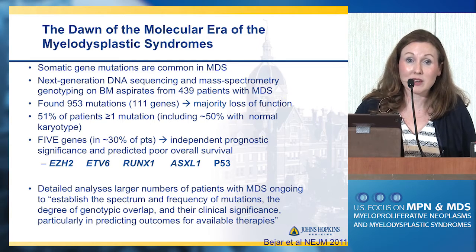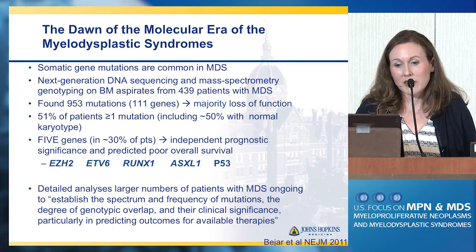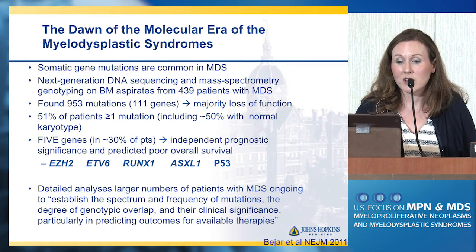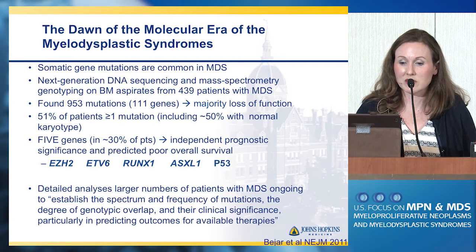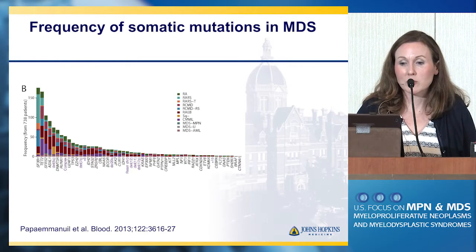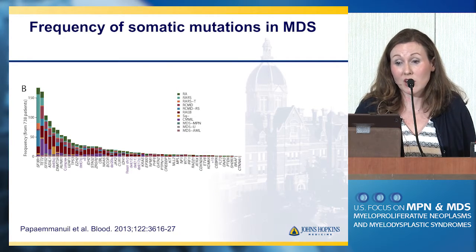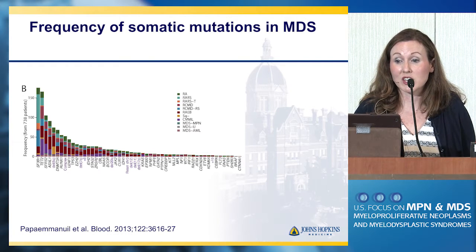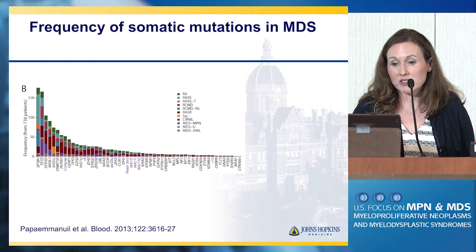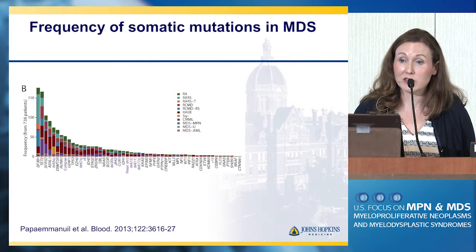And this is where the field is going — again, trying to decrease that heterogeneity. I list the five genes here from this publication, and I know everyone's most familiar with TP53. There have been further detailed analyses of larger numbers of patients trying to establish the spectrum and frequency of these mutations, and as we move forward we're understanding more about their clinical significance. This is just another representative publication showing, based on morphologic subcategory pathologically, the frequency of these somatic mutations that we can see in myelodysplastic syndrome. This is becoming more and more standard of care at the time of diagnostic procedures for these patients to check for these somatic mutations.